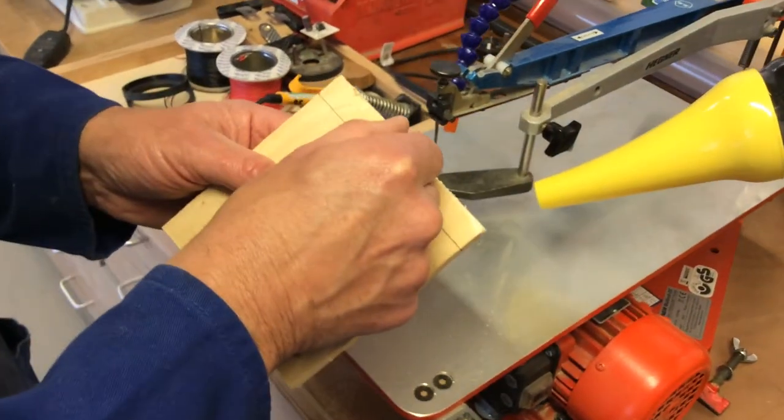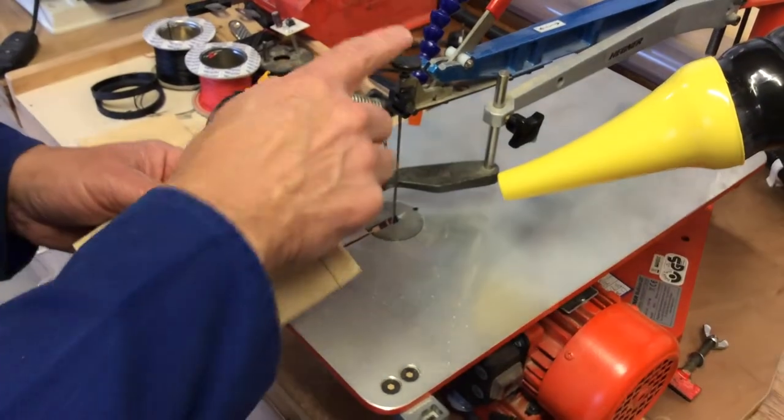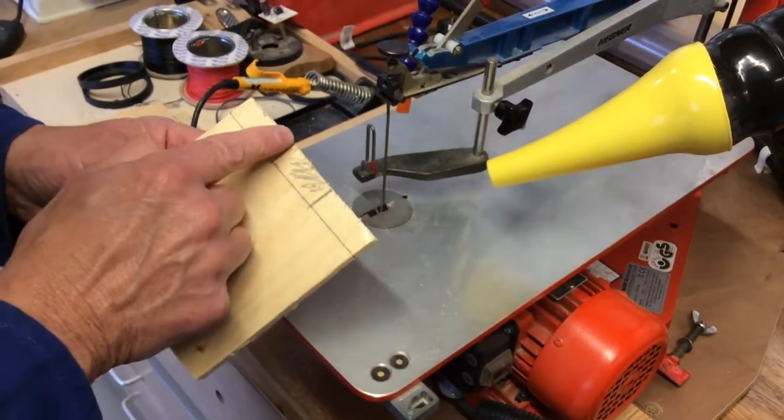We could use the tenon saw and cut down there and there at the bench, which will be quite acceptable. I'm actually going to use the scroll saw for all three cuts here, so I'm going to go down there, down there, then we're going to take that piece out.